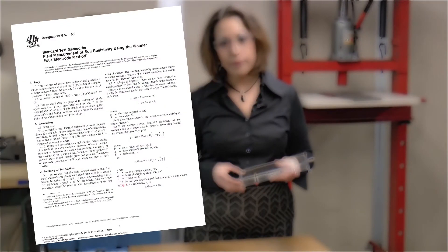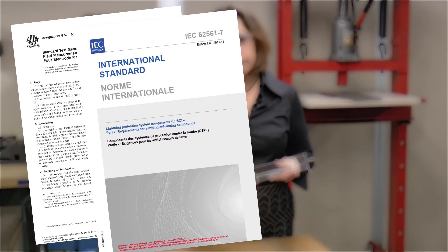A soil box is an approved method of resistivity testing according to ASTM G57-06. This is the recognized test standard referenced in Part 7 of IEC 62561 Lightning Protection System Components Requirements for Earthing Enhancing Compounds.